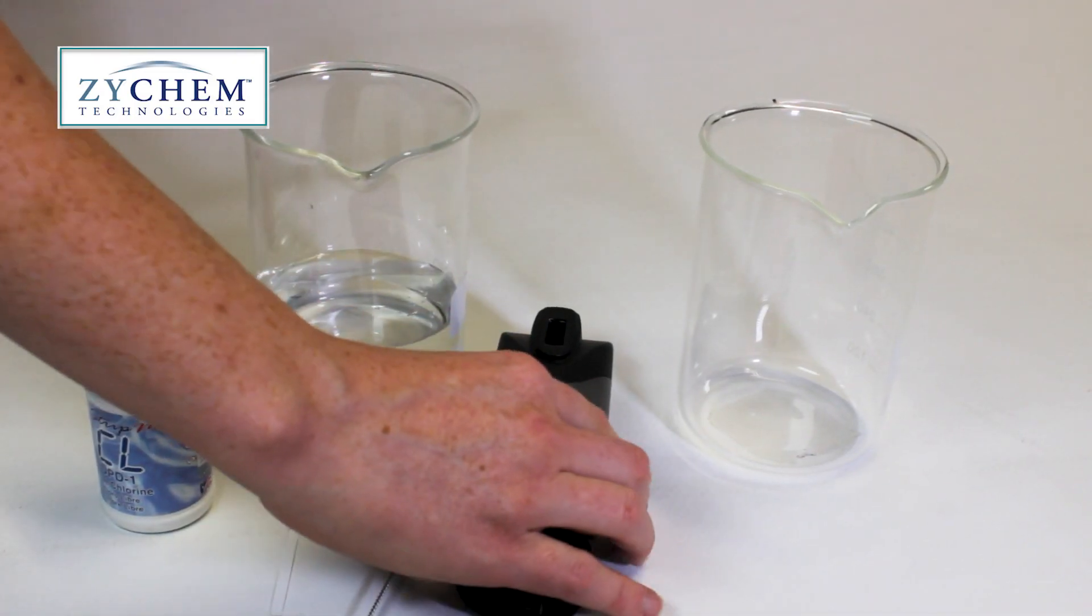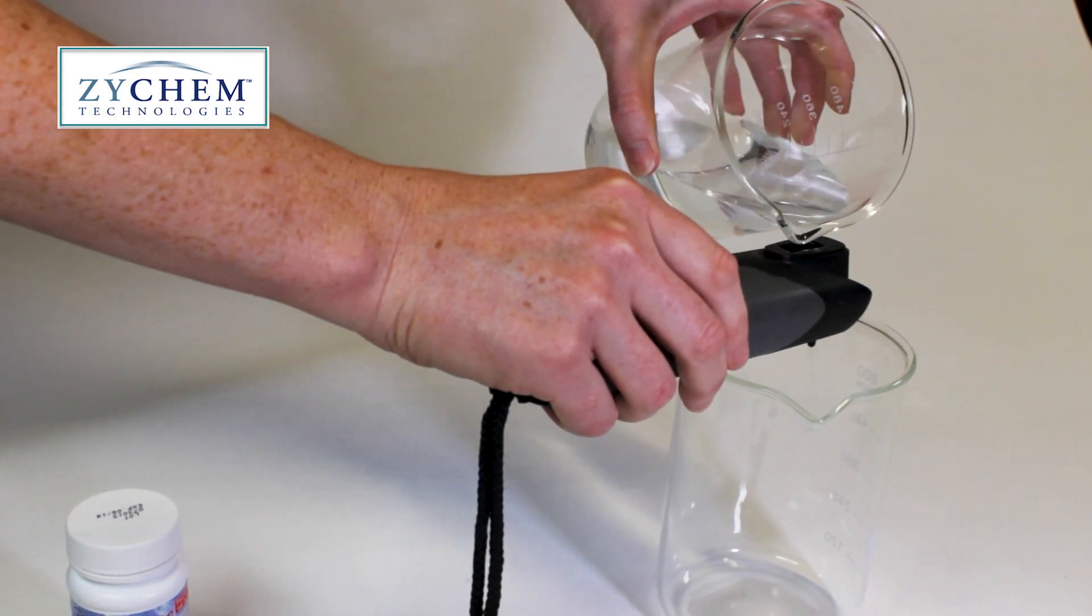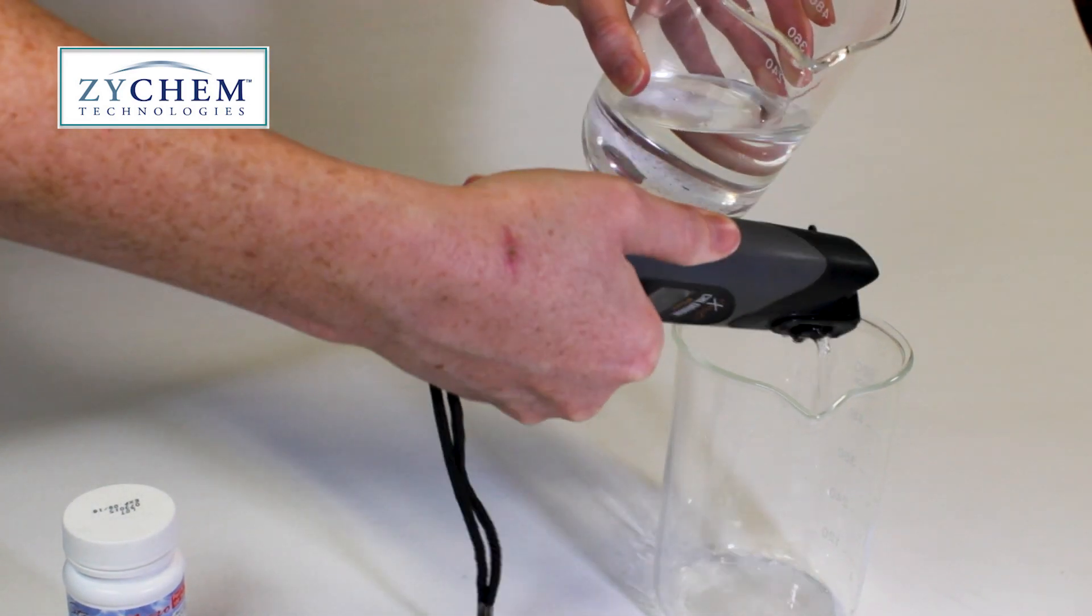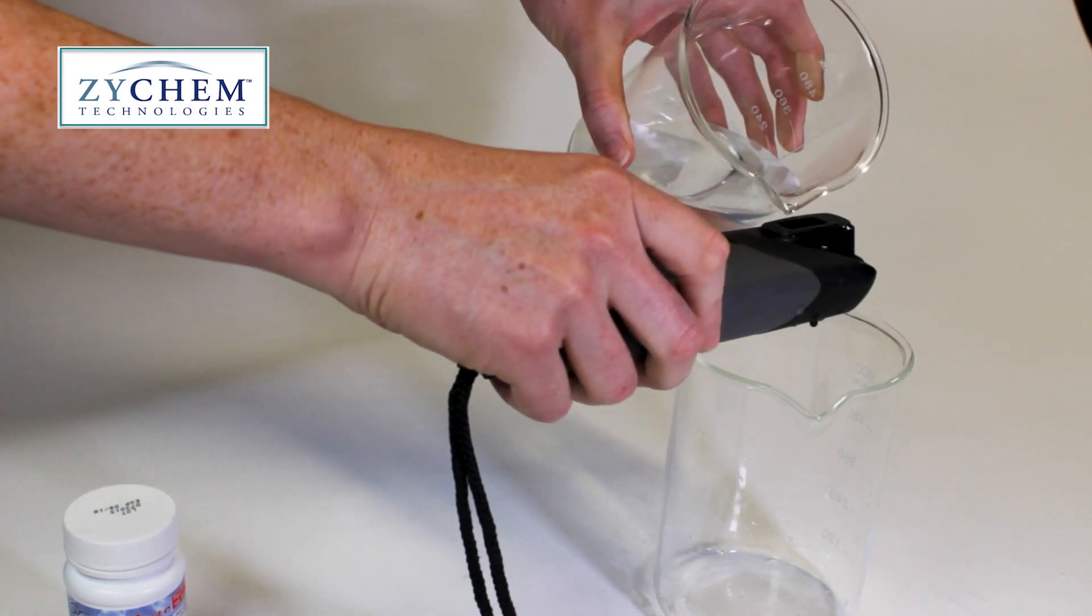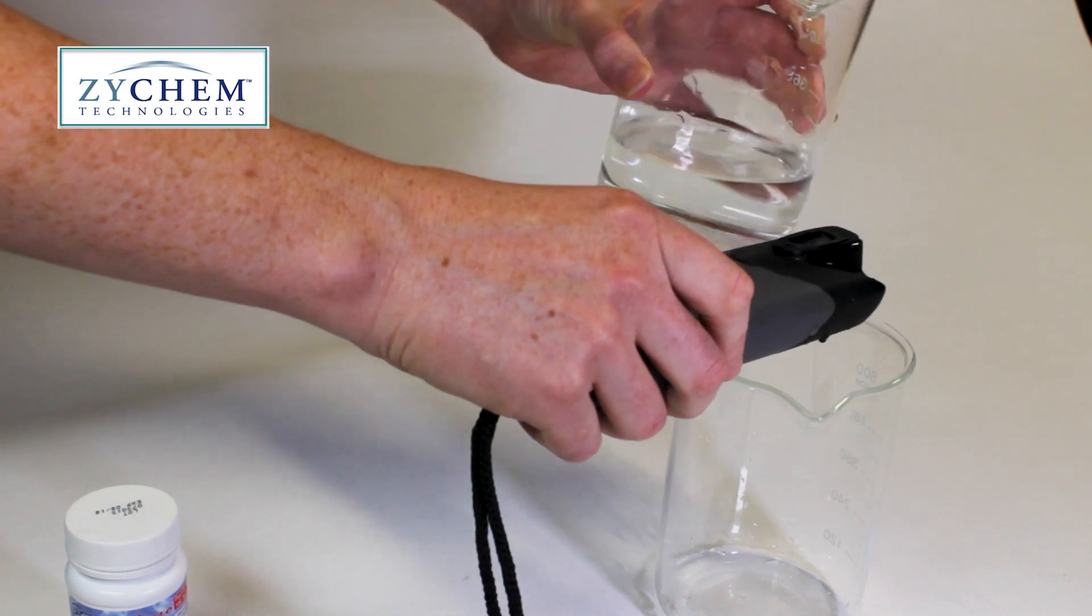Then we're going to fill the sample cell in the unit three times with clean water, discarding between each fill. Rinsing the cell like this before we run our test will ensure the sample cell is free from cross-contamination or impurities, and that the results we get are accurate for the water sample we're actually testing.